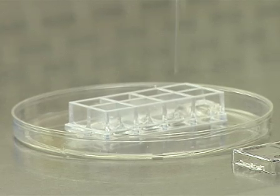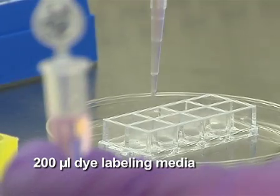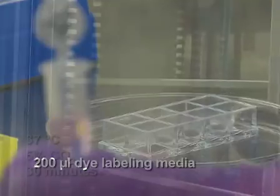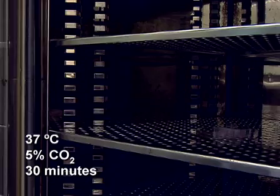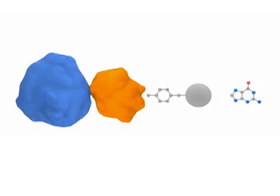Carefully remove growth media from the samples and add 200 microliters of dilabeling media to each well. Incubate samples at 37 degrees Celsius, 5% carbon dioxide, for 30 minutes. It is at this step that the benzyl group on the TMR substrate will covalently link to the SNAP tag and release guanine.